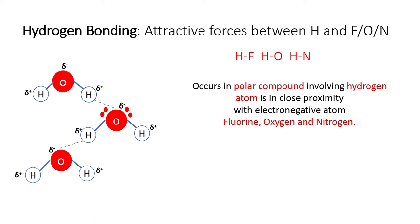A classic example of molecules with hydrogen bonding is water. As shown in this diagram, the hydrogen atom with a delta positive sign is attracted to its neighbouring oxygen atom with a delta negative sign. The negative charges here are mainly due to the unshared electron pairs on the oxygen atom. The attractive forces between these molecules is called hydrogen bonding, and it is the reason behind the high boiling point of water and why ice crystals have lower density compared to its liquid state.